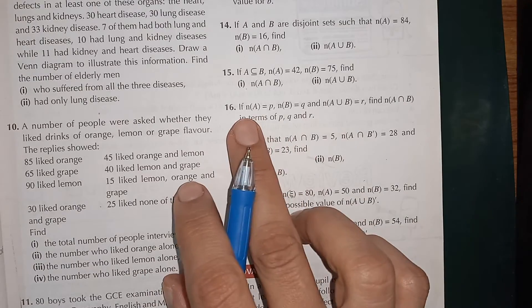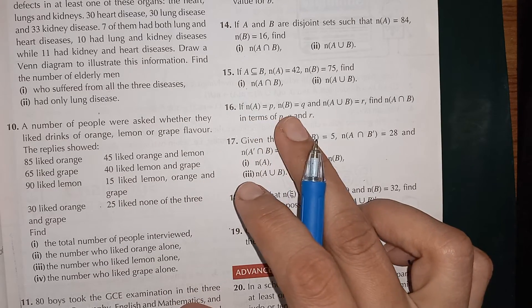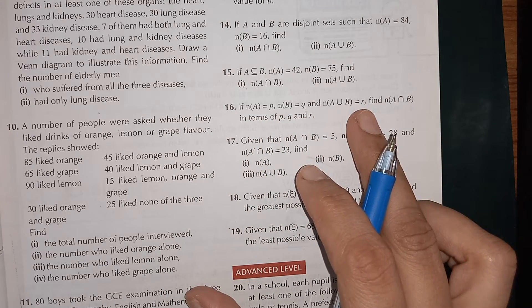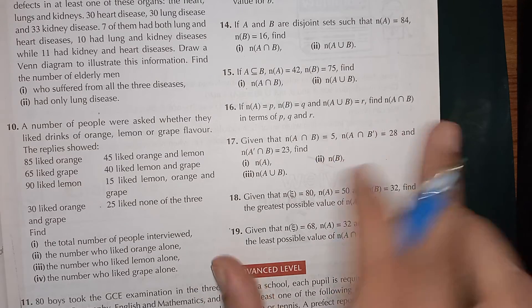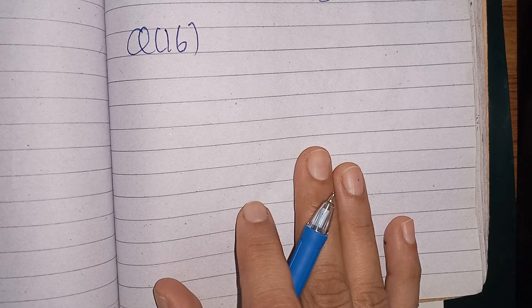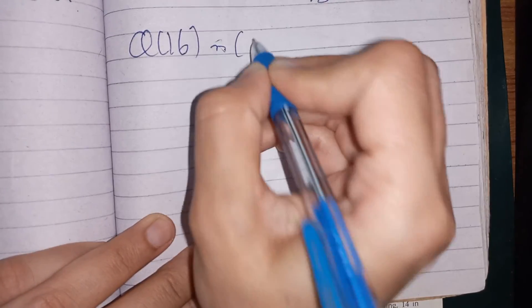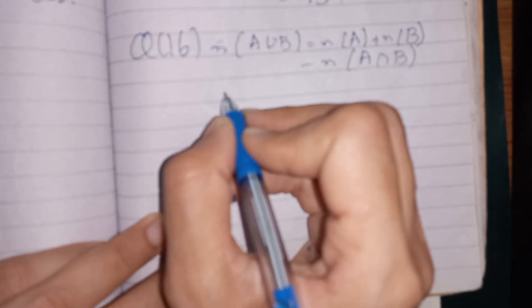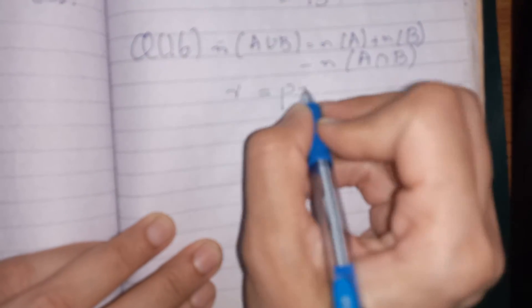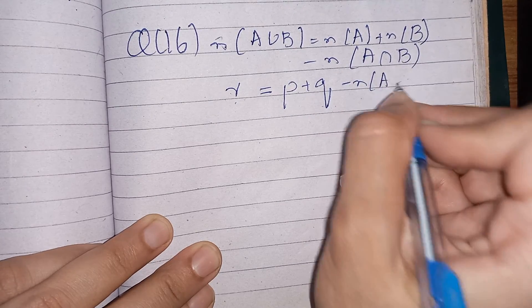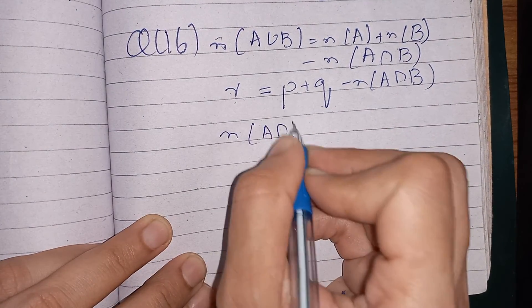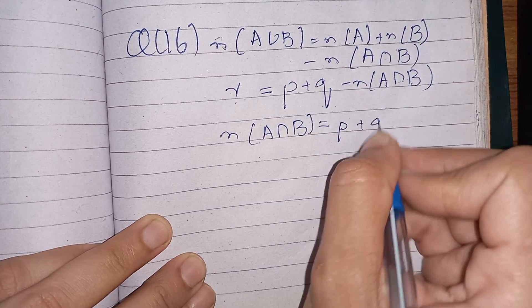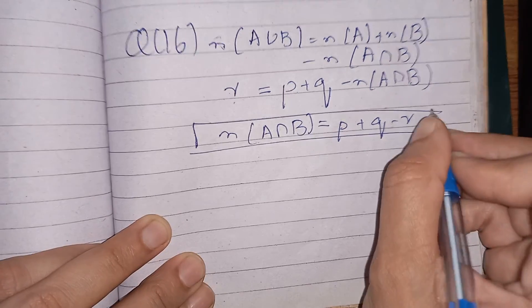Question 16: n(A) = p, n(B) = q, and n(A union B) = r. Find n(A intersection B) in terms of p, q, and r. Applying the formula: n(A union B) = n(A) + n(B) minus n(A intersection B), so r = p + q minus n(A intersection B). Therefore n(A intersection B) = p + q minus r.